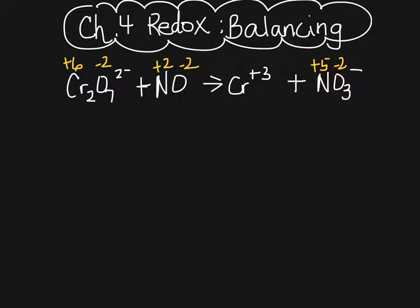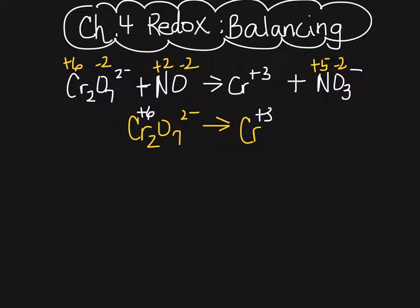Then we are going to separate the half reactions — we write down one oxidation and one reduction. One half reaction becomes Cr₂O₇²⁻, and I'm just going to write down the oxidation state for chromium since that is the one that is changing, and that goes to Cr³⁺. The other half reaction deals with the nitrogen: NO with N at plus 2 is the one changing, going to NO₃⁻ with nitrogen at plus 5. So now we have our two half reactions.